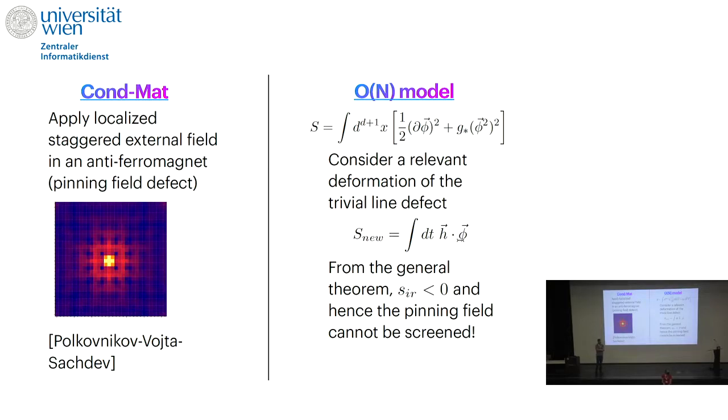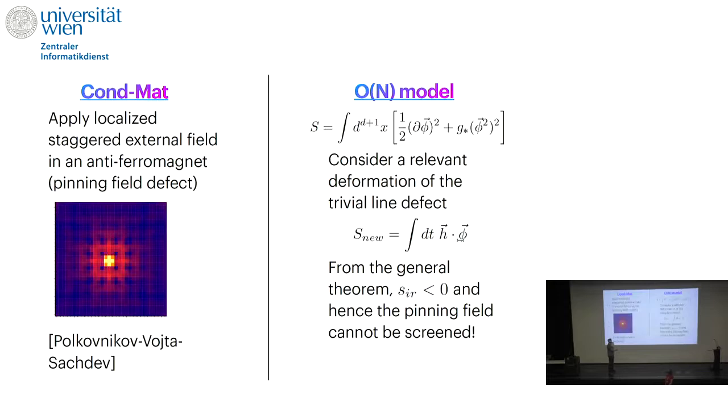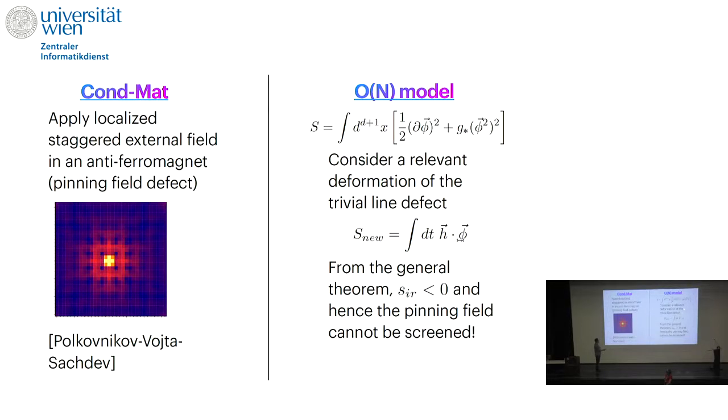I also have a question about the defect entropy. You gave this interpretation for what it means when it's negative. Does that then mean that there is nothing particularly special for it being zero? Zero is very special—zero is the value of the unit operator. If a Wilson line is screened then s equals zero. It doesn't mean that s equals zero implies that it's screened, but if it's screened then s is equal to zero. This was very useful for us to prove that this defect which condensed matter people are interested in must be not screened. There are many papers about it in condensed matter and it's a question, but it's a one line consequence of the monotonicity theorem. But otherwise there could in principle be non-trivial impurities which are conformal but have s equals zero.